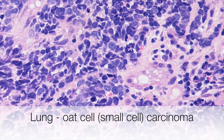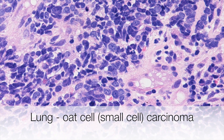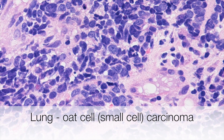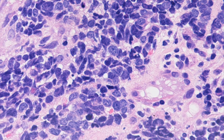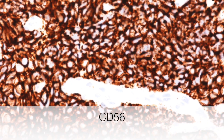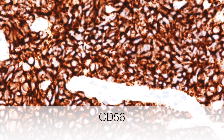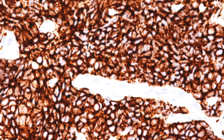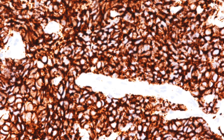The type of lung cancer that has cells resembling oats is, of course, oat cell carcinoma, usually referred to these days as small cell carcinoma. The tumour cells show neuroendocrine changes, hence the positive CD56 stain.